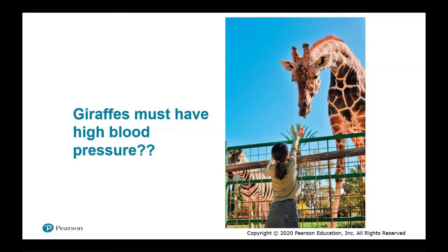Surprisingly, giraffes have high blood pressure. Bernoulli's equation suggests that as blood flows upward at roughly constant speed from the heart to the brain, pressure drops as height increases. For blood to reach the giraffe's brain with sufficient pressure, its systolic blood pressure must be about 280 mmHg. For humans, high blood pressure is dangerous — it can damage arteries, making them less elastic and decreasing blood and oxygen flow to the heart, potentially leading to heart disease.